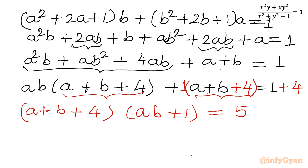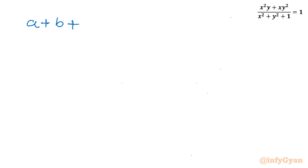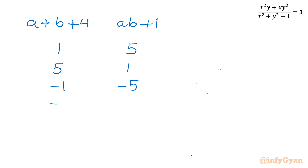Now I will consider factorizations of 5. The factor pairs (a+b+4, ab+1) can be: (1, 5), (5, 1), (-1, -5), or (-5, -1), since the product must equal 5.